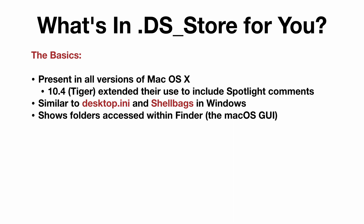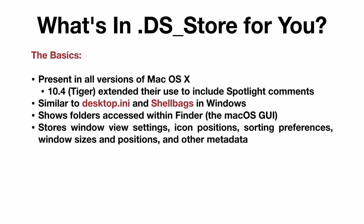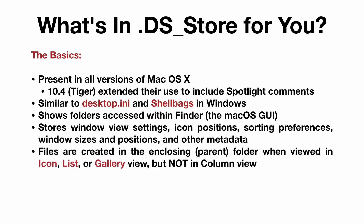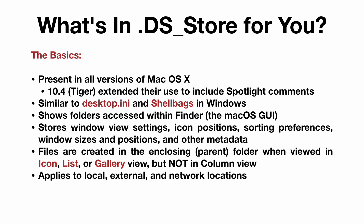DS_Store files can show us the folders accessed within the Finder, which is the macOS GUI. They store window view settings, icon positions, sorting preferences, window sizes and positions, and other metadata for the folder in which they reside. The files are created in the enclosing parent folder when that folder is viewed in icon, list, or gallery view — but not in column view, strangely enough. And this doesn't just apply to local folders, but also to external volumes and network locations, which explains why Windows users so frequently encounter them.